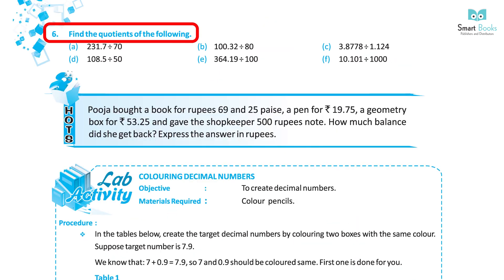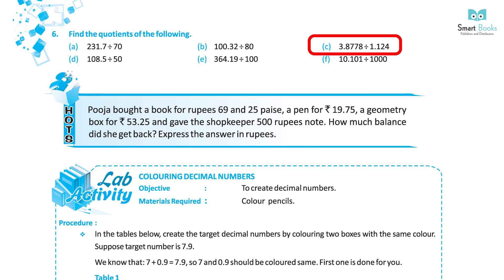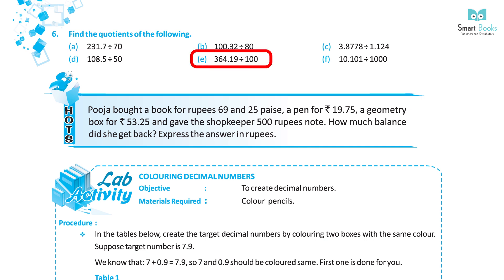Question 6: Find the quotients of the following. A. 231.7 ÷ 70 = 3.31. B. 100.32 ÷ 80 = 1.254. C. 3.8778 ÷ 1.124 = 3.45. D. 108.5 ÷ 50 = 2.17. E. 364.19 ÷ 100 = 3.6419. F. 10.101 ÷ 1000 = 0.010101.